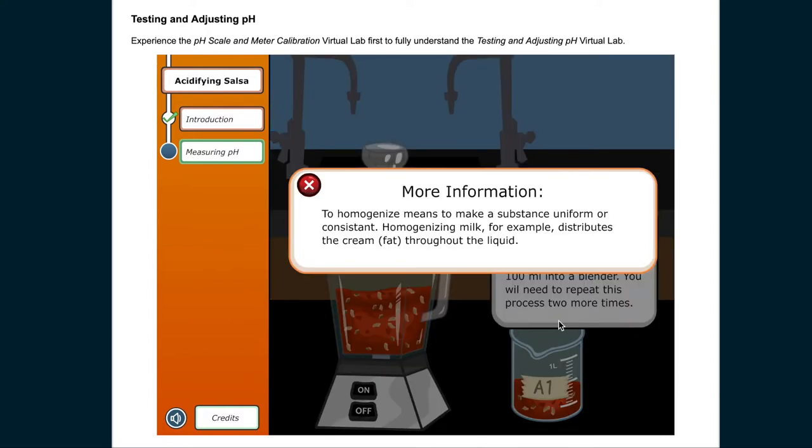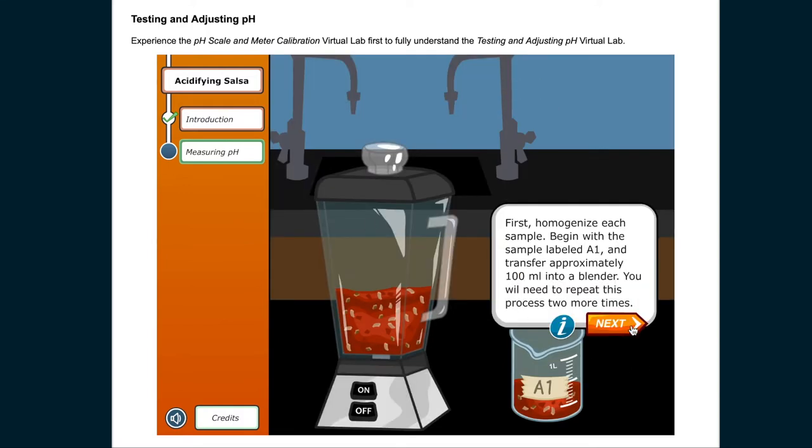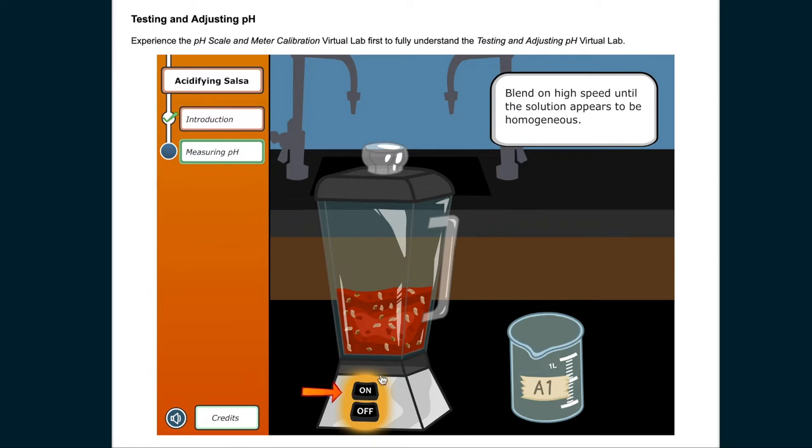To homogenize means to make a substance uniform or consistent. Homogenizing milk, for example, distributes the cream or fat throughout the liquid. Blend on high speed until the solution appears to be homogenous.